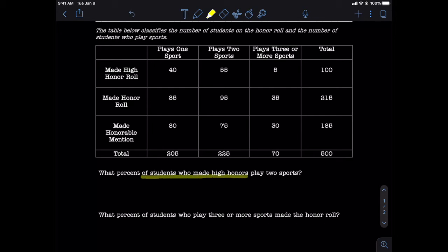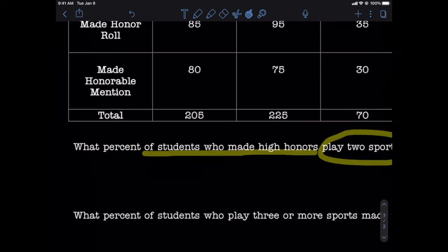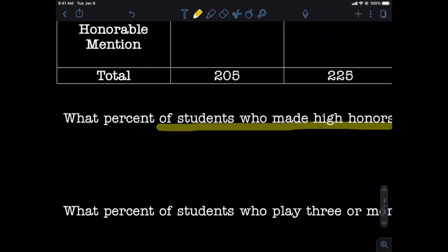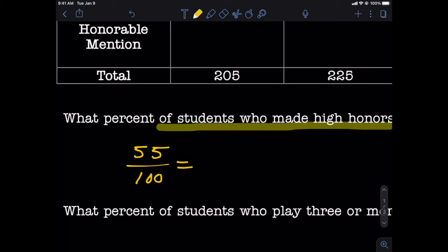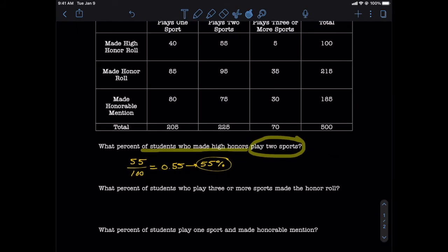The question shows us that our second category is plays two sports. So to find the appropriate part, we're going to look for the intersection of high honors and plays two sports. That's this number right here, 55. Again, the correct total is based on this phrase right here. We're looking for the total number of students who made high honors. So the fraction that we're going to set up is part 55 over total 100. The division is going to yield the decimal equivalent of our percent, 0.55, which turns into 55 percent. So 55 percent of students who made high honors play two sports.